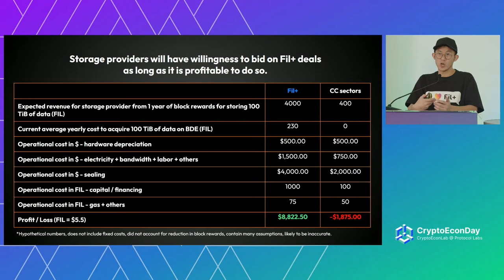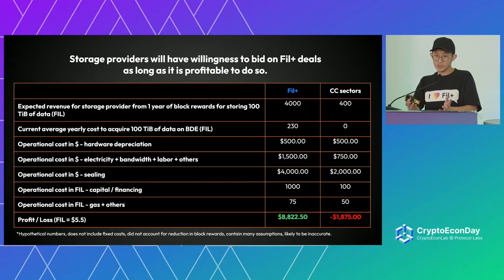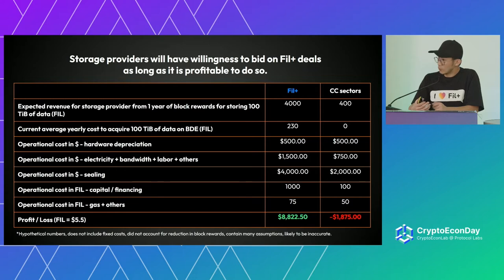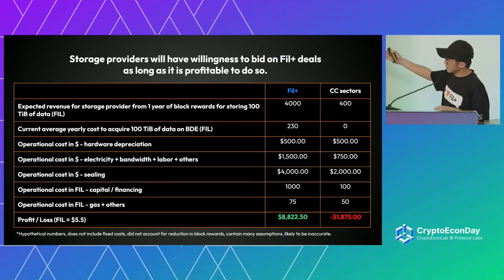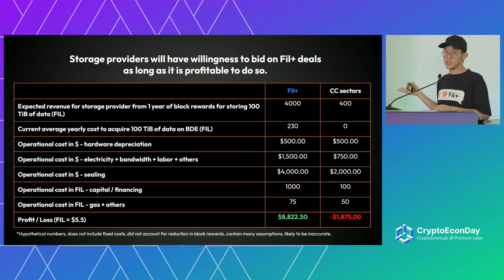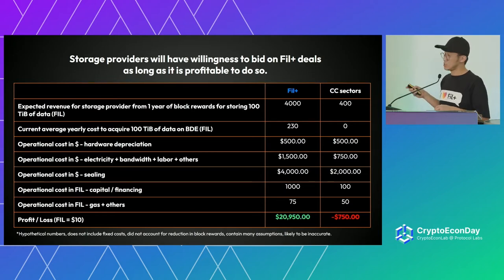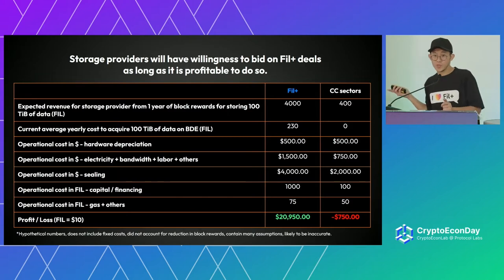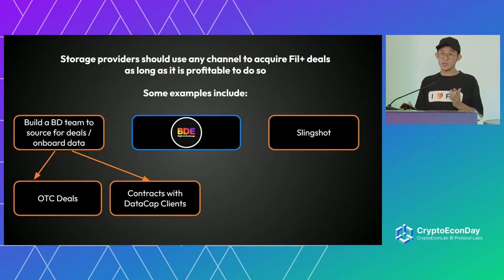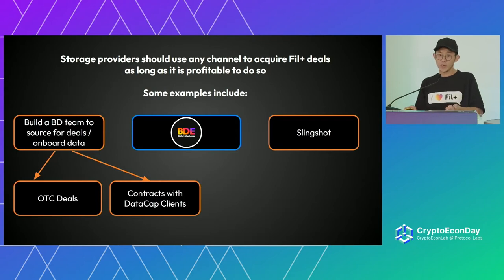We assume Filecoin at $5.50. For every 100 tebibytes of data for Fil+, you get 4,000 Filecoin in block rewards. You can tell that if you are storing Fil+ you come out way ahead compared to a CC sector, and if Filecoin is at $10 it's even higher. So what this means is that as a storage provider you should use any channel to acquire Fil+ deals as long as it's profitable — you can build a BD team, use Big Data Exchange, or use Slingshot programs.